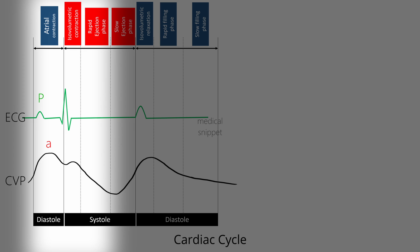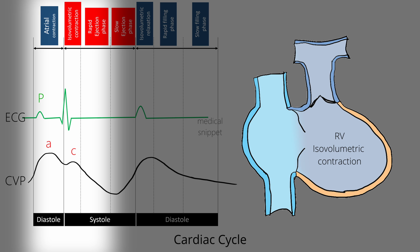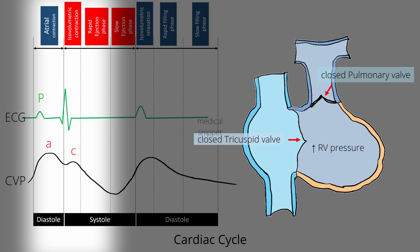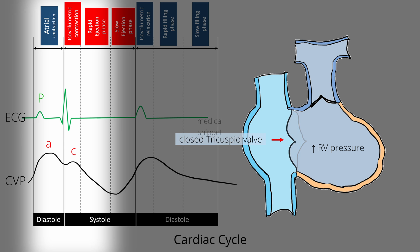Shortly after the A wave is the second peak called the C wave. This occurs during the start of right ventricular contraction — that is, during the isovolumetric contraction phase. In this phase, the right ventricle starts to contract when both the tricuspid and pulmonary valves are in the closed position. As ventricular pressure increases, the closed tricuspid valve bulges into the right atrium, causing an increase in right atrial pressure, seen as the C wave. Since the C wave occurs during right ventricular contraction, it corresponds to the end of the R wave in the ECG.